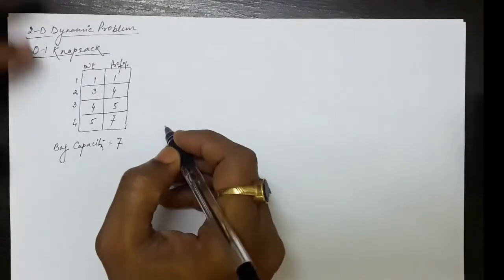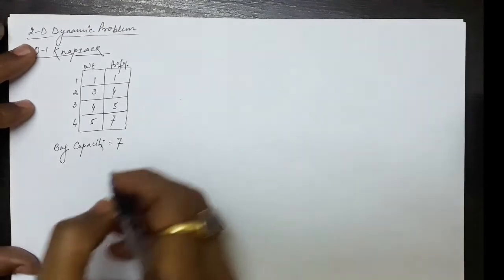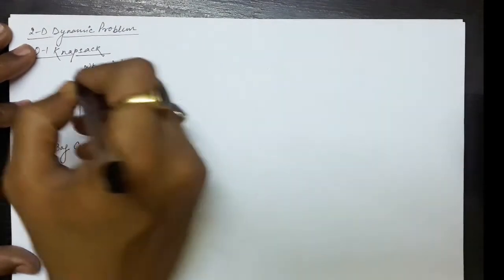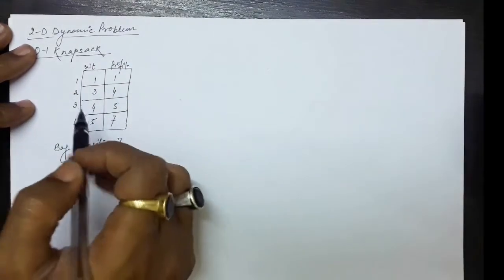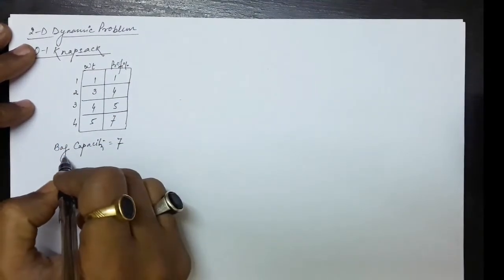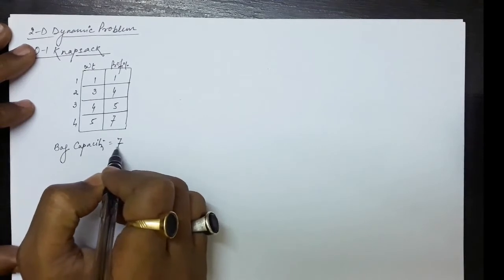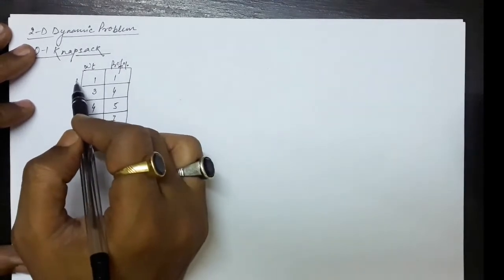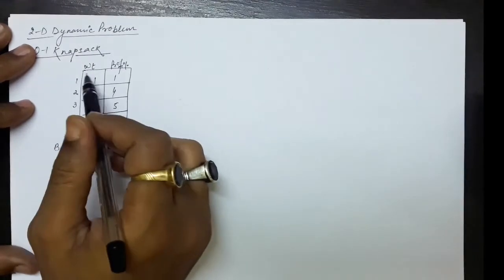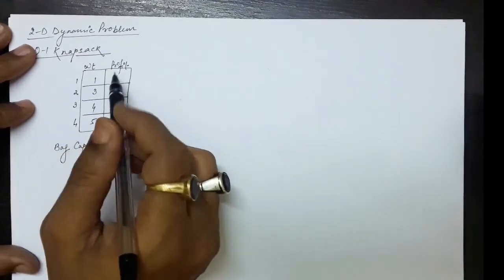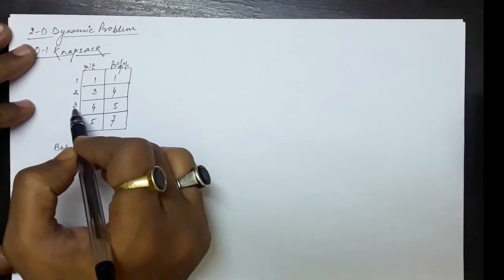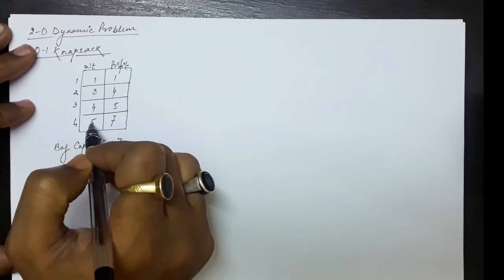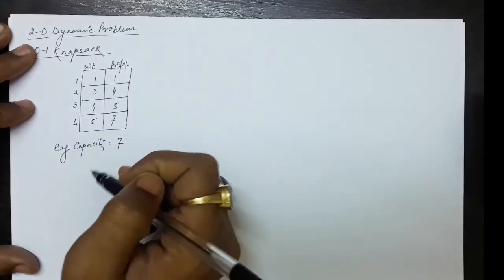To solve this problem using dynamic programming we need a 2D array to store the items. Suppose the knapsack capacity is 7, and there are 4 items. Item 1 has weight 1 and profit 1; item 2 has weight 3 and profit 4; item 3 has weight 4 and profit 5; item 4 has weight 5 and profit 7.